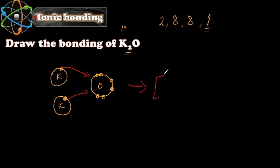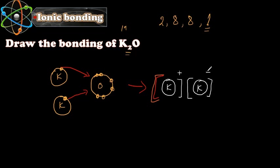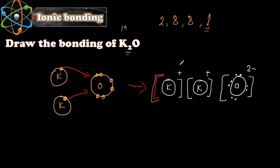So one potassium atom gives one electron to oxygen and the other potassium atom gives another electron to oxygen. After bonding: each potassium lost one electron and becomes K⁺, and the oxygen gained two electrons and becomes O²⁻. You can draw all eight electrons on oxygen, but what is most important is to write the charges correctly. If you write only − instead of 2− for oxygen you will not get the mark in the exam.